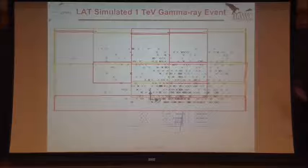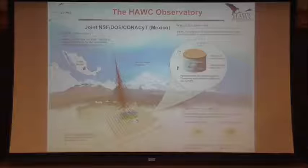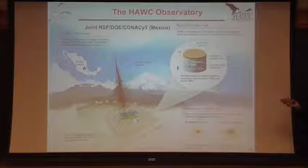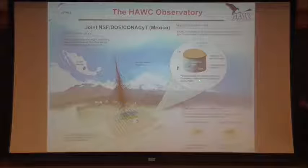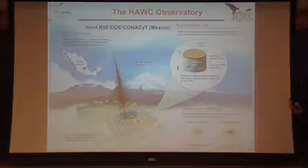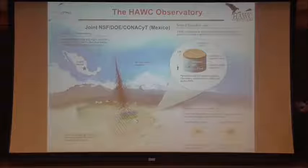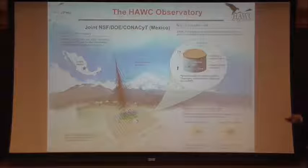The bigger detector that can get up to a TeV is HAWC — the High Altitude Water Cherenkov observatory. It's in the mountains of Mexico near Puebla, near Pico de Orizaba. It's at 14,000 feet or 4,100 meters elevation. It consists of 300 tanks of water, each tank 5 meters tall — roughly about the height of a T-Rex. They're quite big tanks.